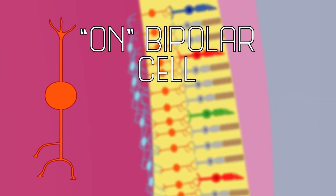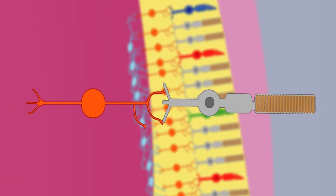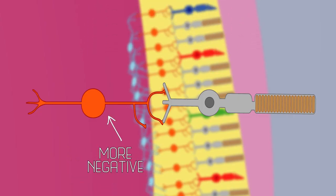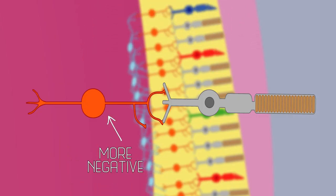These are called on bipolar cells, since they're on when the light is on. And some bipolar cells are the opposite. Instead, they hyperpolarize, or become more negative, in response to their photoreceptor becoming more negative.